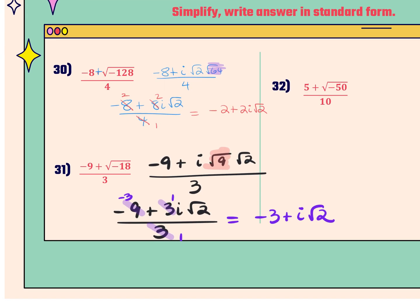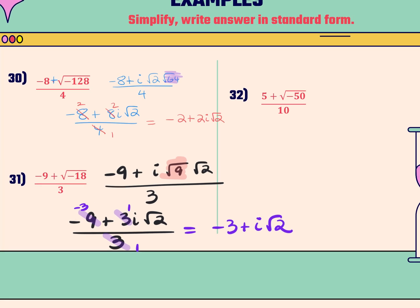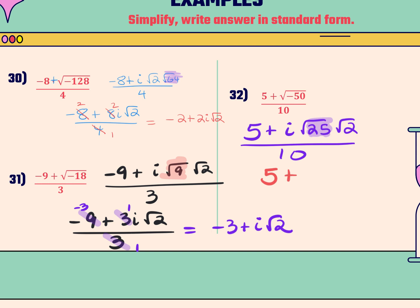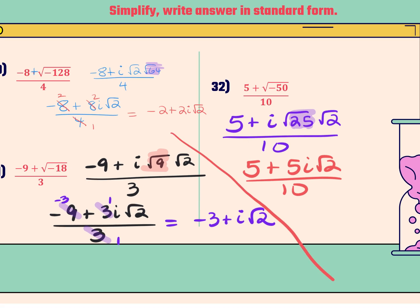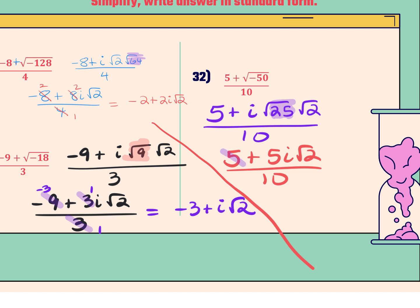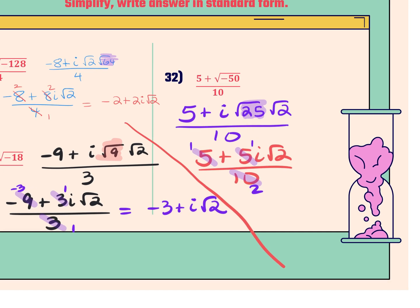For number 32: I'm going to break down the square root of negative 50. I'll pull out the i, so I have 5 plus i, breaking 50 into 25 times 2. I can now square root the 25 to get 5. So I have 5 plus 5i square root 2, all over 10. Dividing all terms by 5 gives 1, 1, and 2. The final answer is 1 plus i radical 2 over 2. When doing the homework, if WebAssign wants you to pull it apart into separate fractions, then do that.